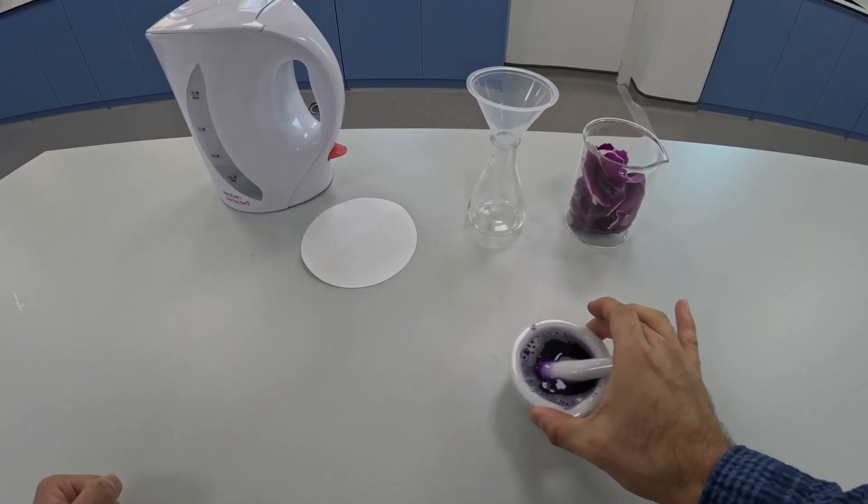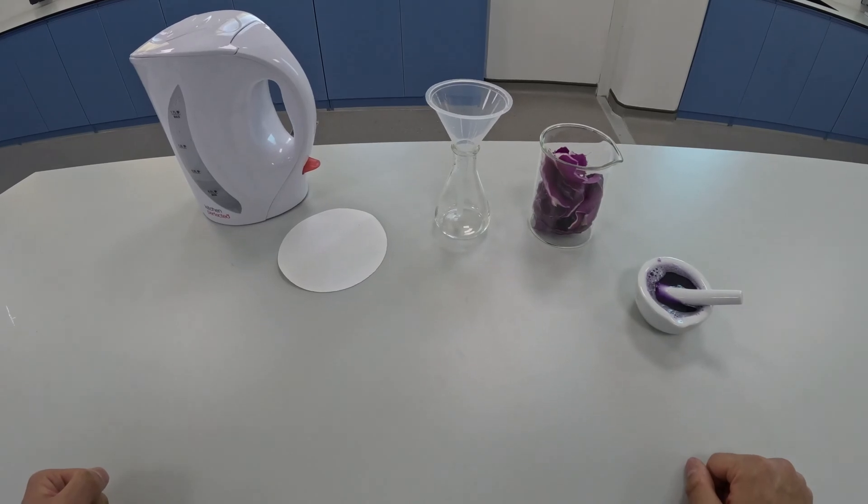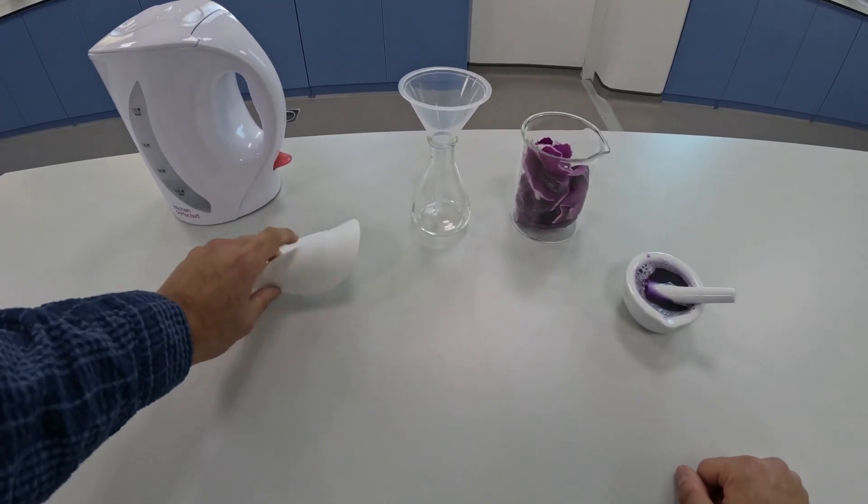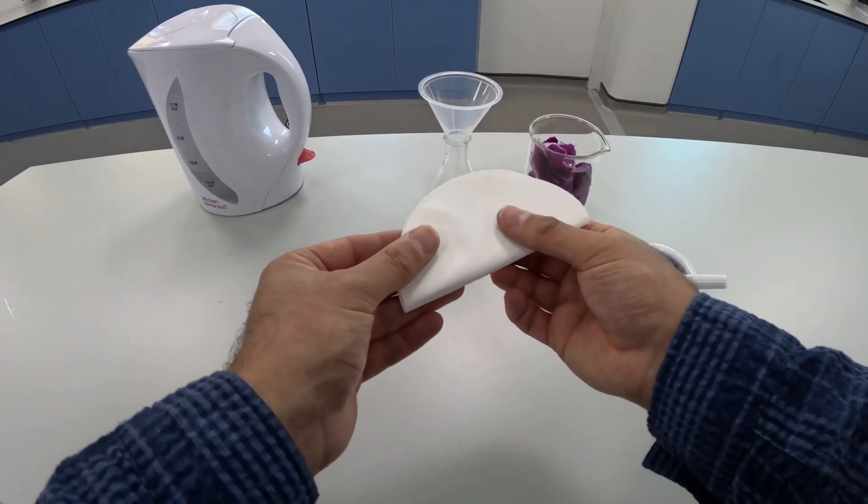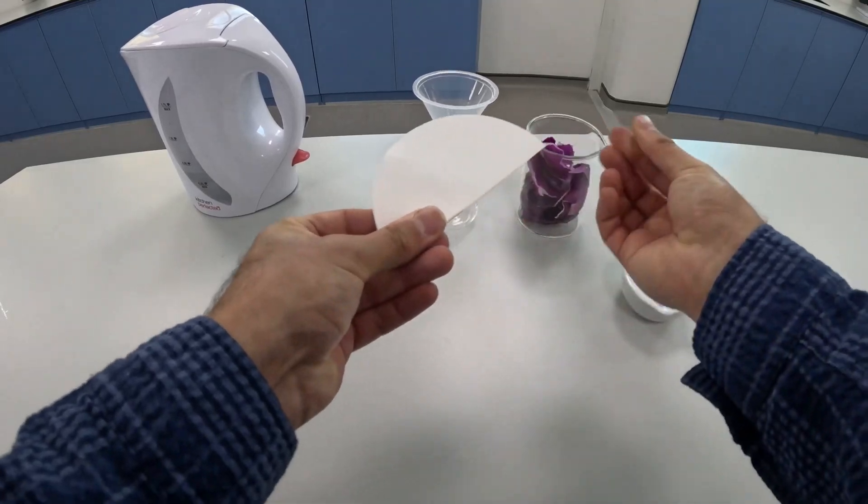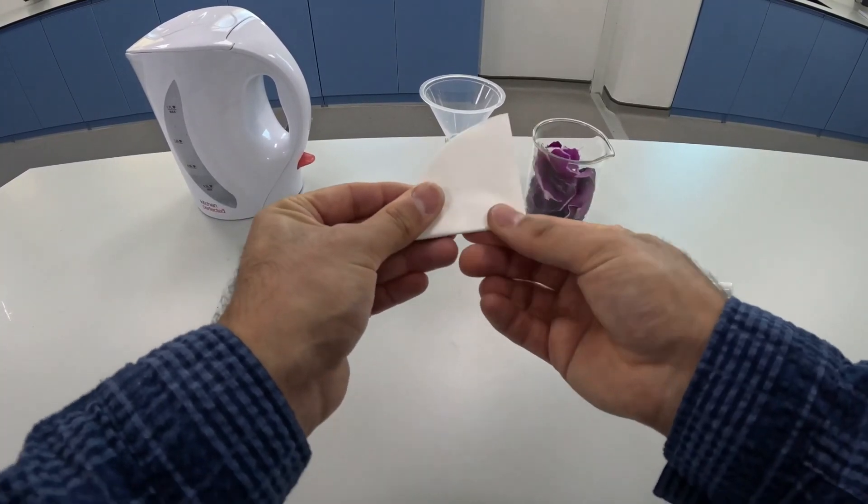And then we want to separate the large chunks of red cabbage from the indicator that we're going to use later. So we need filtration here. We're going to take a piece of filter paper and fold it in half twice. So that's once. That's twice.